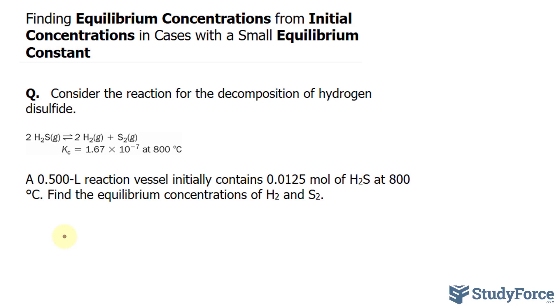We're told that a 0.500 liter reaction vessel initially contains 0.0125 mole of hydrogen disulfide at 800 degrees Celsius. Notice they haven't given us the concentration. Normally, they give us molars, but here they've given us the number of moles and liters. Remember that molar is moles per liter. So right from the get-go, we can take the number of moles, 0.0125, and divide it by the amount of liters, 0.500.